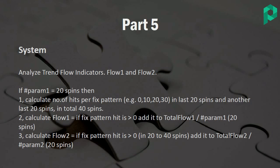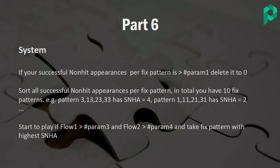You do the same for the next 20 spins back — the second part of the number sequence, 40 spins total. Sum up the fixed hit ratios of all fixed patterns and divide by 20 spins, since parameter two is also 20 spins. If the successful non-hit appearances per fixed pattern exceed parameter one (20 spins), you reset it to zero.